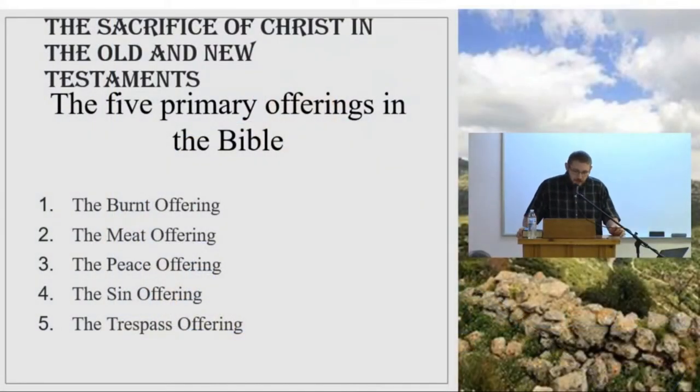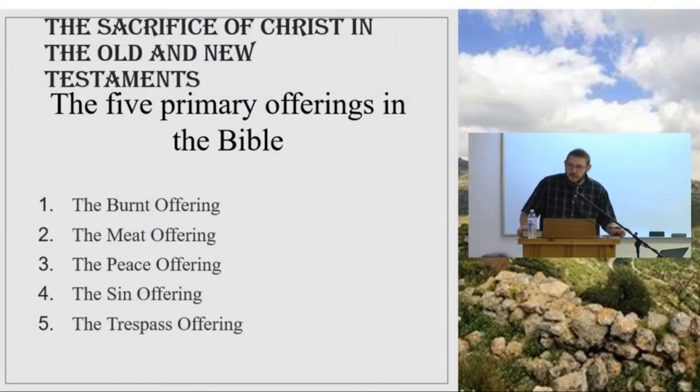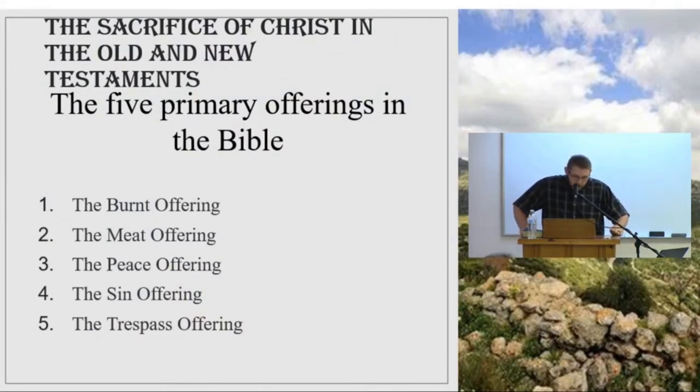There are five primary offerings in the Scriptures: the burnt offering, the meat offering, the peace offering, the sin offering, and the trespass offering. Conveniently, they are located in Leviticus chapters 1, 2, 3, 4, and 5, in that order. We'll be spending a week in each of those chapters, Lord willing.